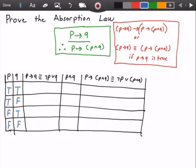P implies Q is logically equivalent to not P or Q. So the first row will be true because Q is true, and the next row will be false because not P is not true, which is false, and Q is also false.